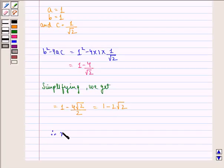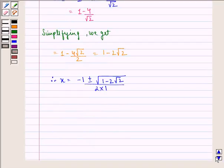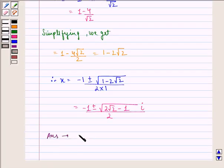Therefore, x can be written as minus 1 plus minus under the root 1 minus 2 root 2 divided by 2 into 1. This is same as minus 1 plus minus under the root 2 root 2 minus 1 i divided by 2. Therefore, our answer to this question is minus 1 plus minus under the root 2 root 2 minus 1 i by 2.